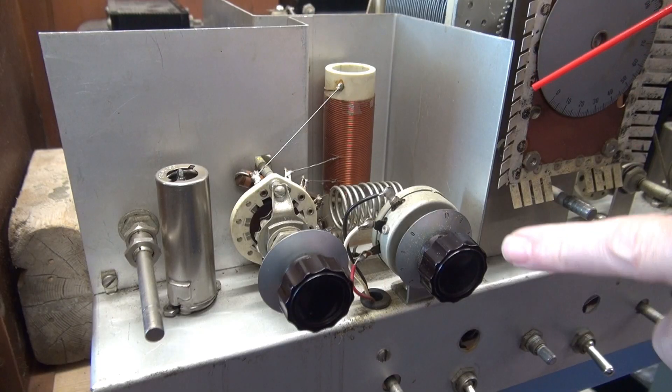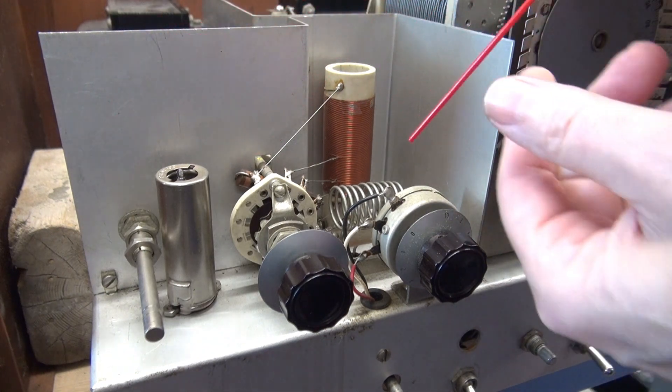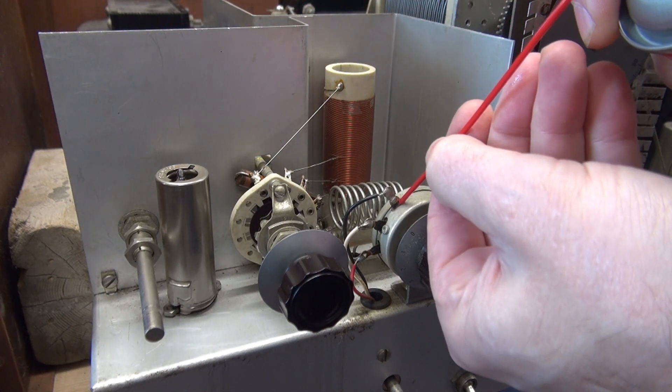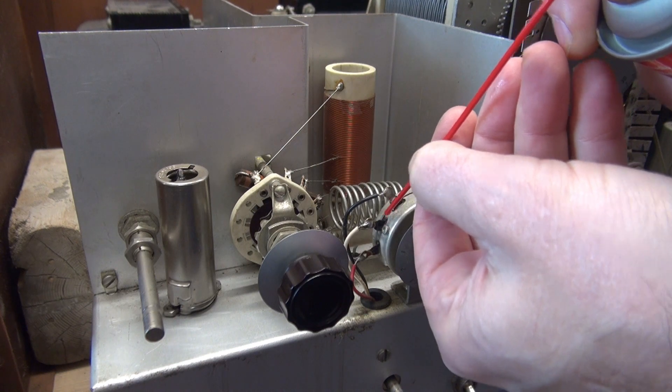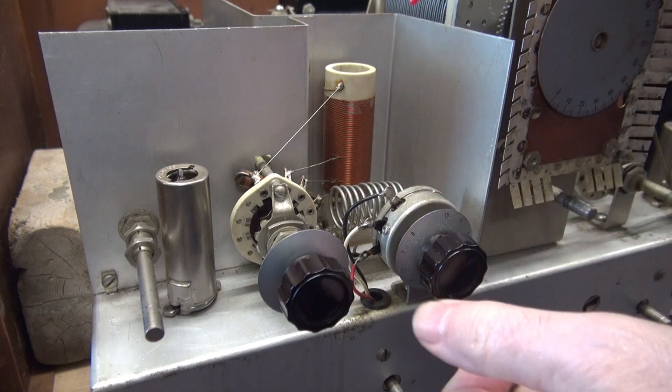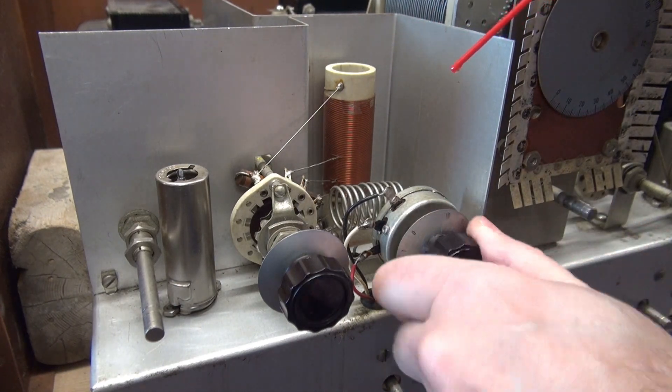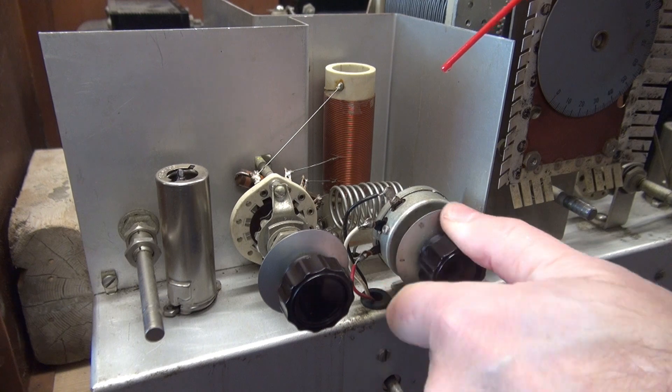So to gain access to these wire wound pots, take your D5 and spray it in where the terminals come out. There's also a small access hole on some of these pots. And you can get that cleaner inside and as you turn it, you'll feel it starting to free up the pot.